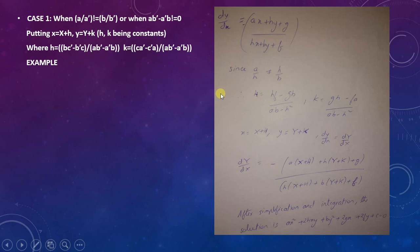Case 1: when a/a' is not equal to b/b', or ab' minus a'b is not equal to zero. We put x = X + h and y = Y + k, where h and k are constants.